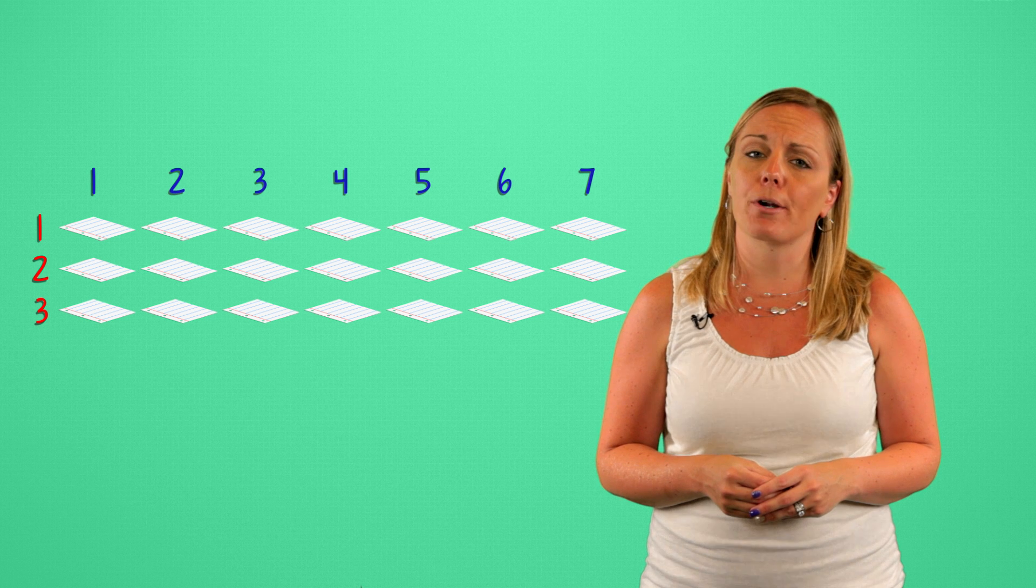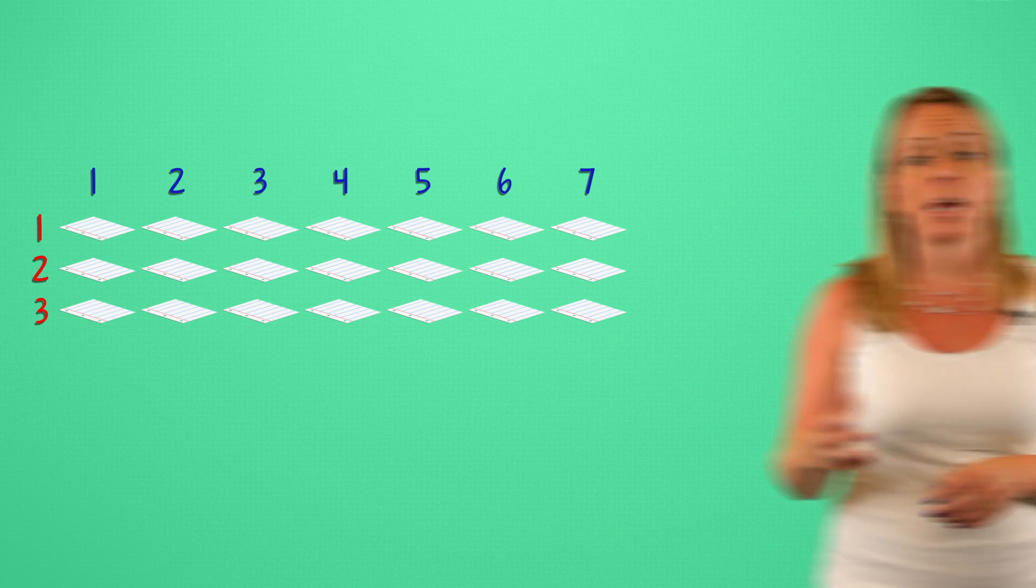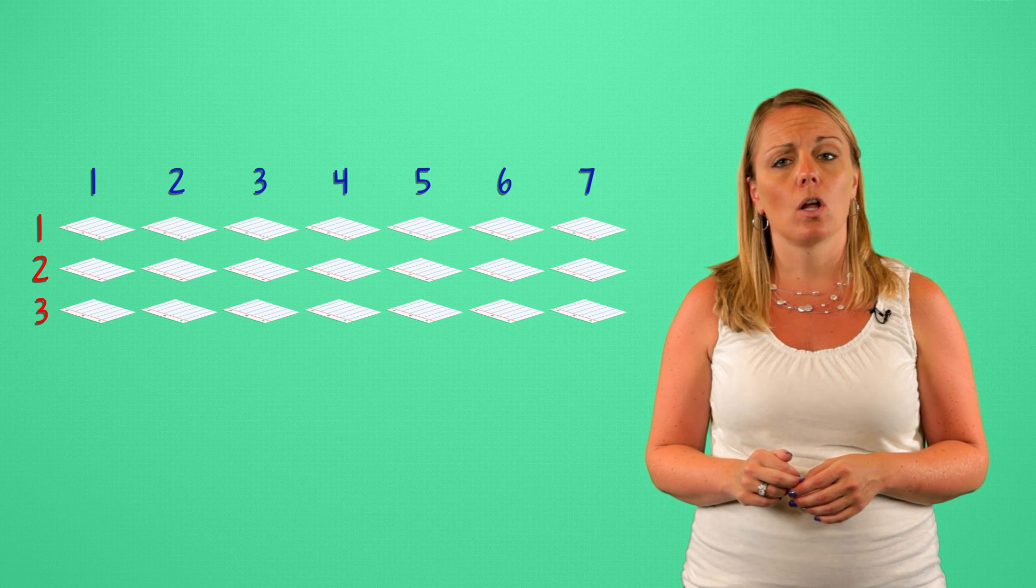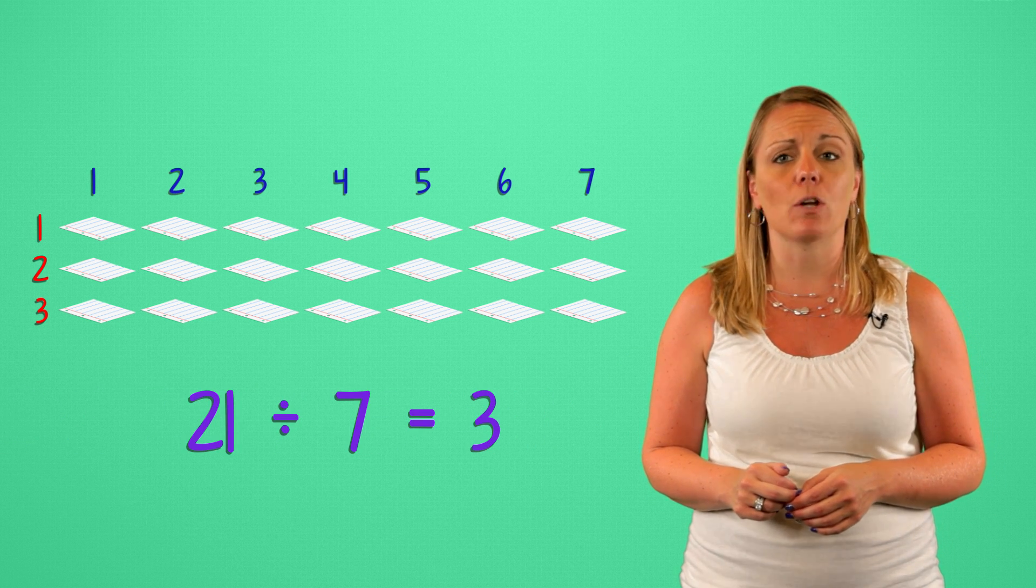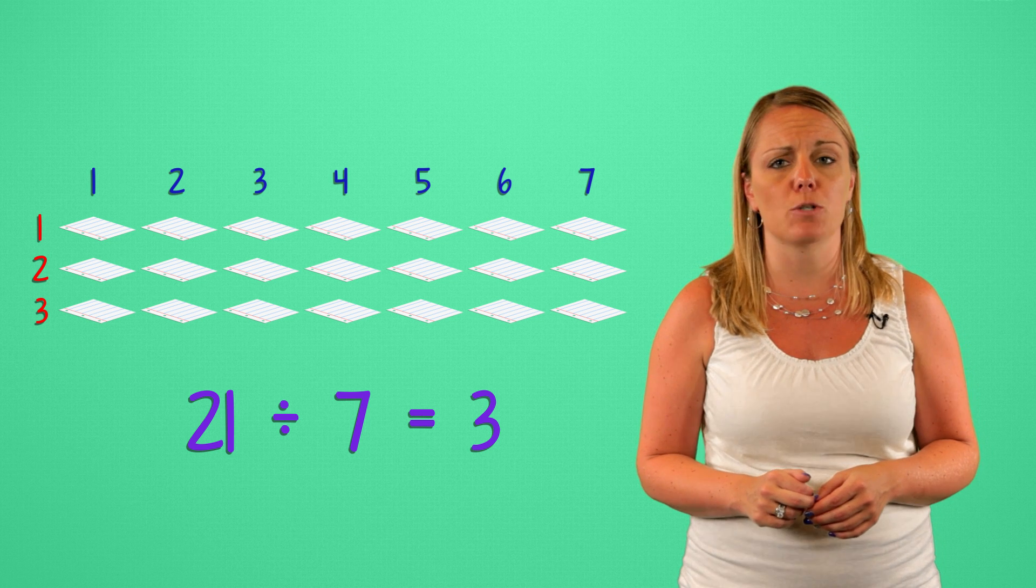How many papers are in each of the seven piles? Here are our seven piles, and each one has three papers in it. Twenty-one divided by seven equals three. Miss Alves placed three pieces of paper in each pile.